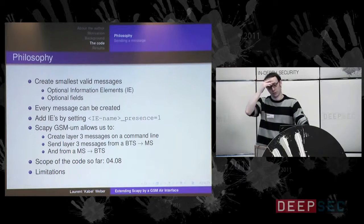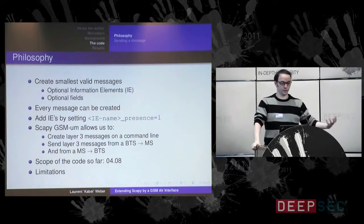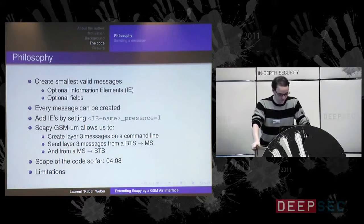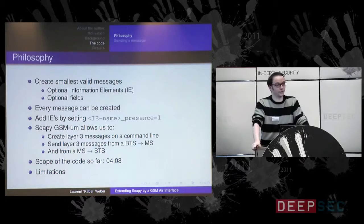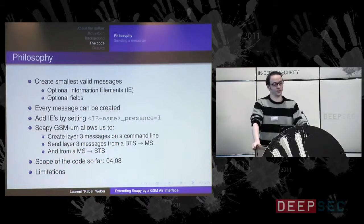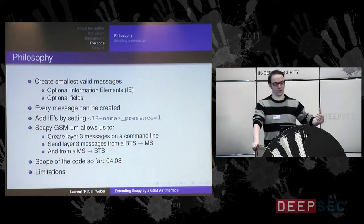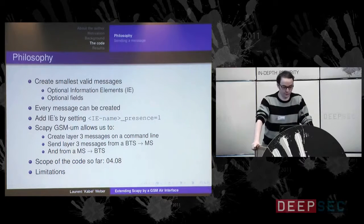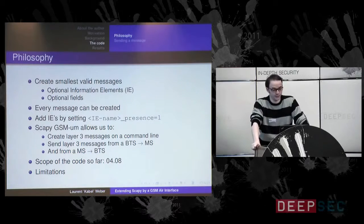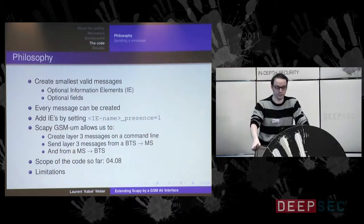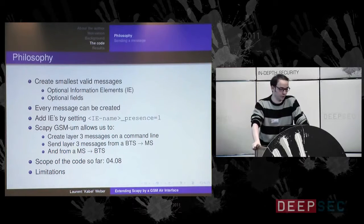Now the code. One of the most important ideas of the tool — following Philippe Biondi's philosophy — is that you are able to create valid packets where the default values are correct, in a very fast way. In order to get this I decided to drop everything that was optional. In GSM there are a lot of packets that have optional information elements and optional fields. So the basic packet you create when you use my tool is the smallest possible packet, where all the optional stuff is cut out. This allows you to be very fast.